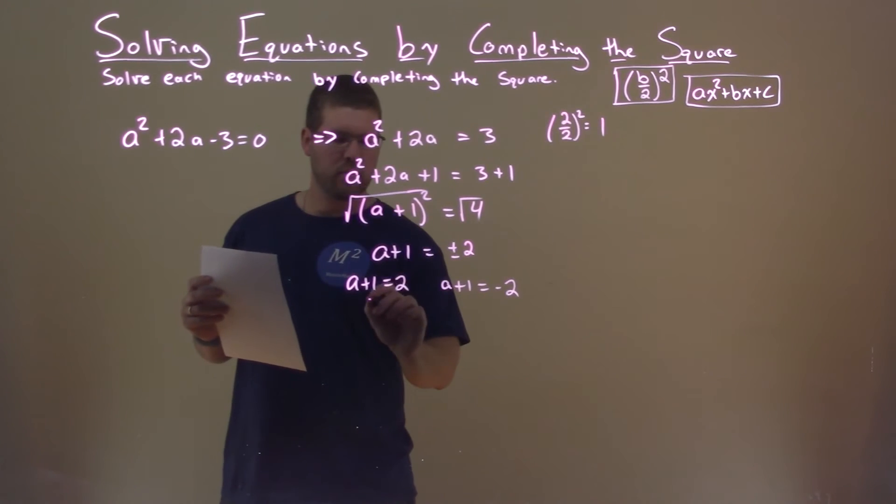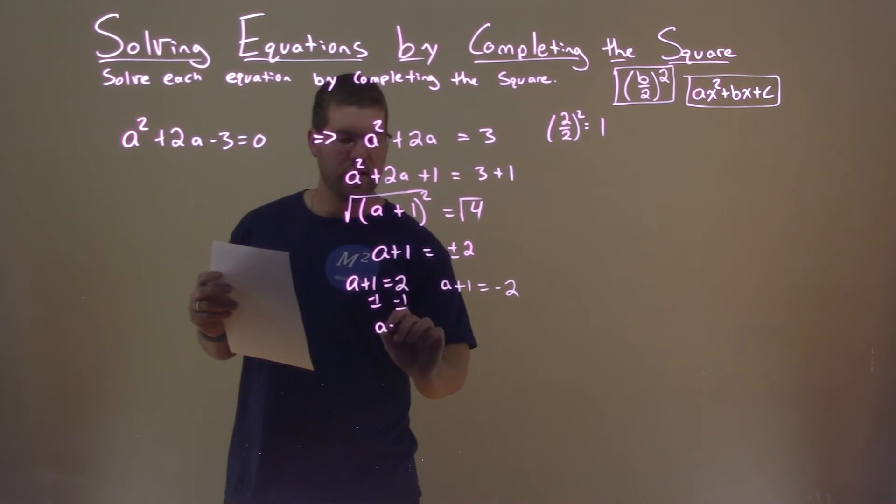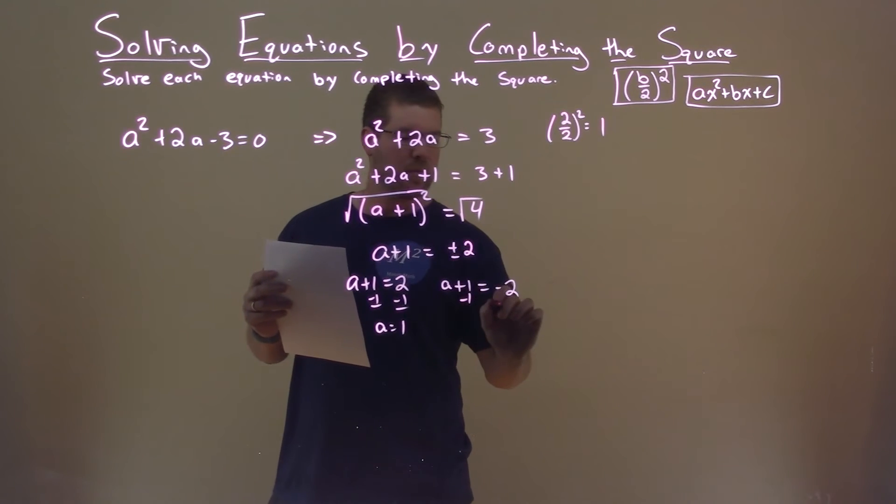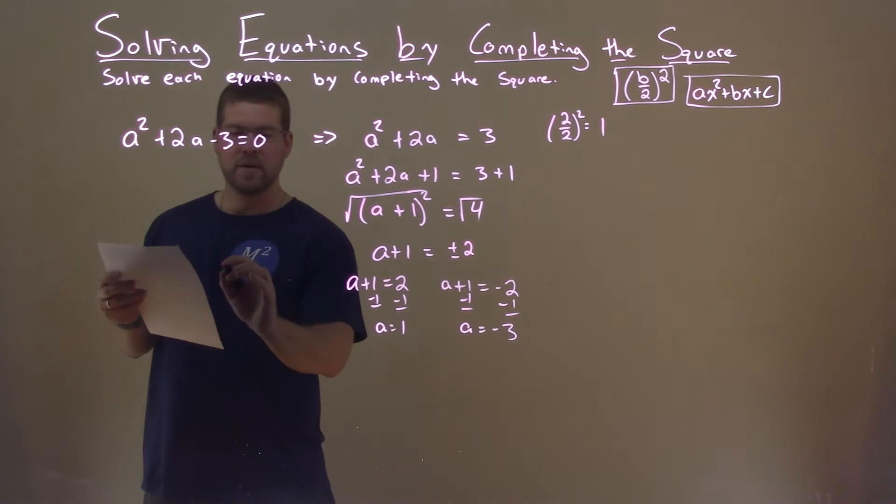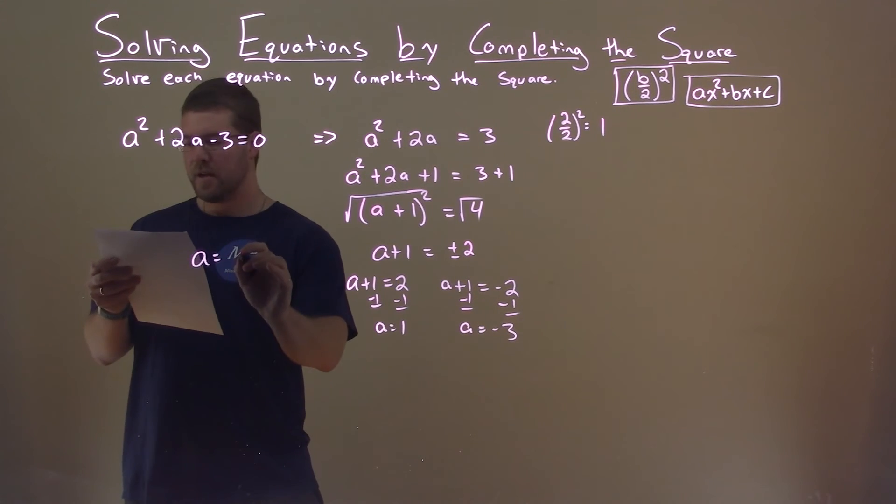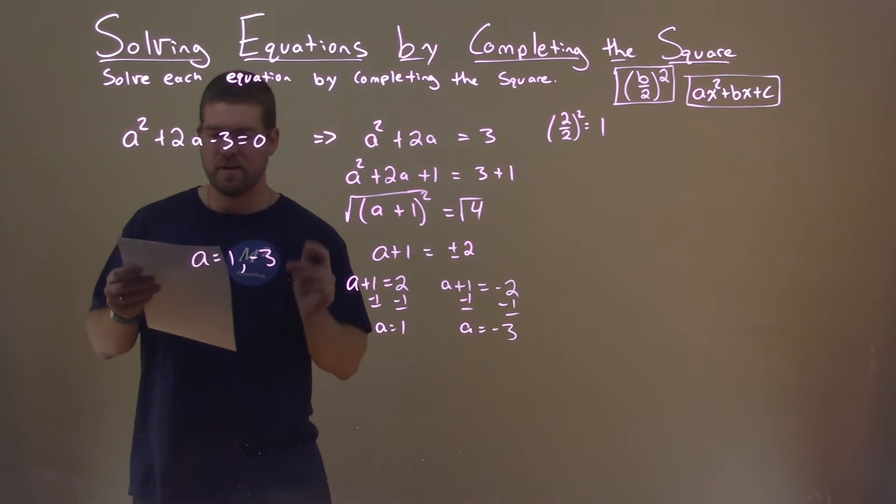Solve each one, subtract 1 from both sides. A equals 1, subtract 1 from both sides. A equals a negative 3. And so my two solutions here are a equals a positive 1 and a negative 3.